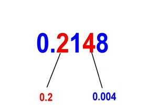Our next example is 0.2148. As you can see, we have demonstrated that the 2 is bigger than the 4 because the place value is greater.